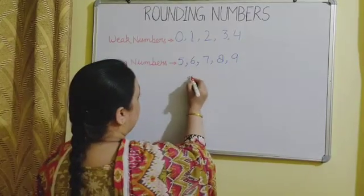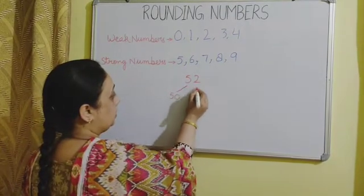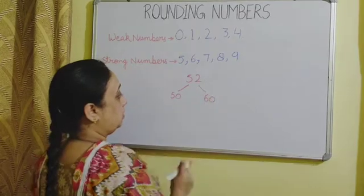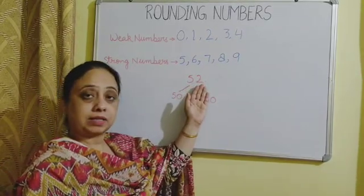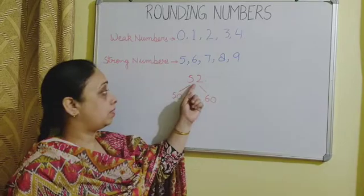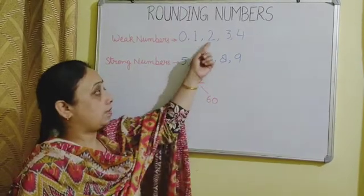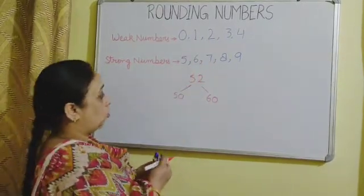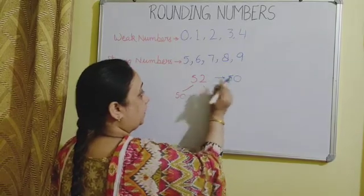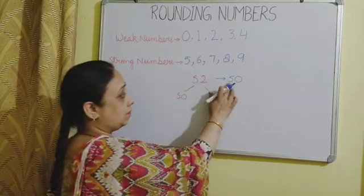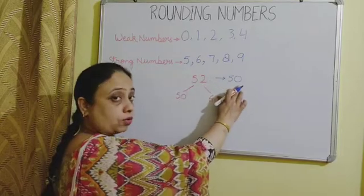Suppose we have to round off 52. Now 52 is the number which lies between 50 and 60. Before rounding the tens, we first have to look to the right — that is the 1's digit — and see whether the number is weak or strong. Now 2 is a weak number, so 52 will be rounded off to 50. The tens place remains the same and we put a 0 in place of 2.